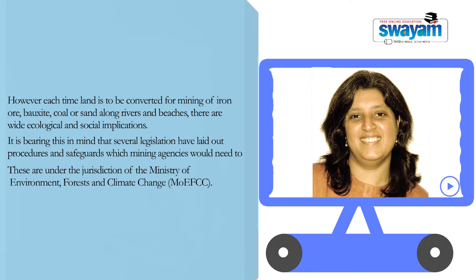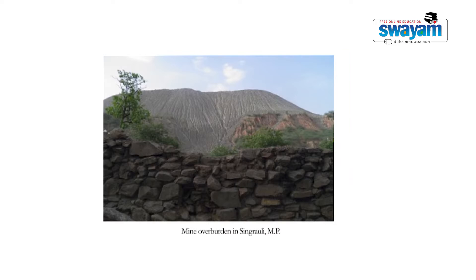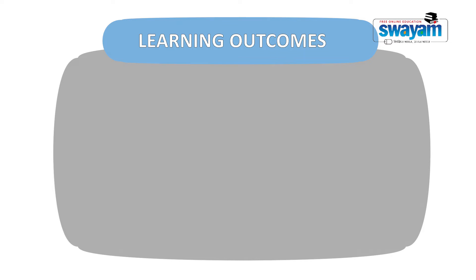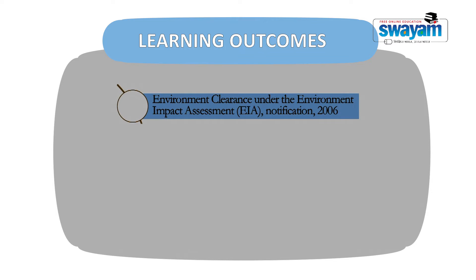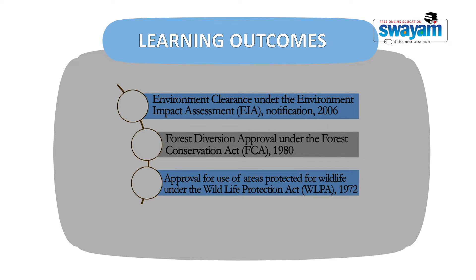Those legislations that are of environmental nature are under the jurisdiction of the Ministry of Environment, Forests and Climate Change. The learning outcomes of this module include understanding three specific environmental regulations and laws: first, related to environmental approvals under the Environment Impact Assessment Notification; second, forest diversion approvals under the Forest Conservation Act; and third, approvals to use protected areas for wildlife if they need to be opened up for mining under the Wildlife Protection Act.